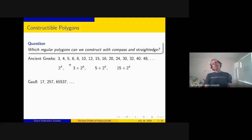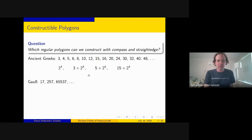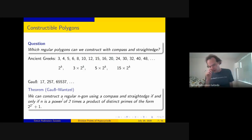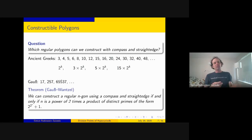Is that all? No—you can do more, but they're harder. Gauss figured out how to get 17, 257, and 65537, and combinations of those with the previous forms. There's a general theorem by Gauss, later completed by Wantzel: we can construct a regular n-gon using compass and straightedge if and only if n is a power of two times a product of distinct primes of the form 2^(2^r) + 1. These are the Fermat primes: 3, 5, 17, 257, 65537—and those are the only ones we know.